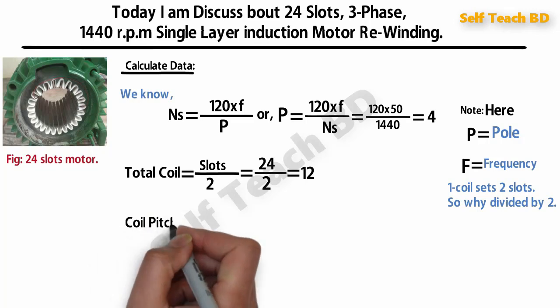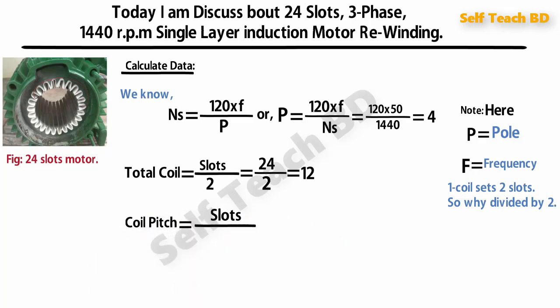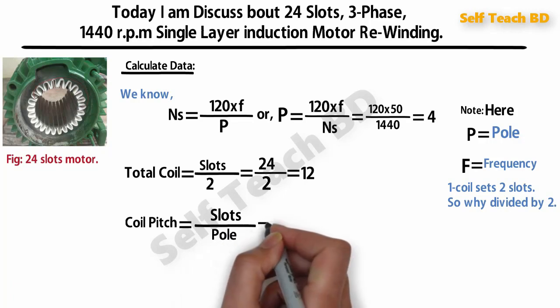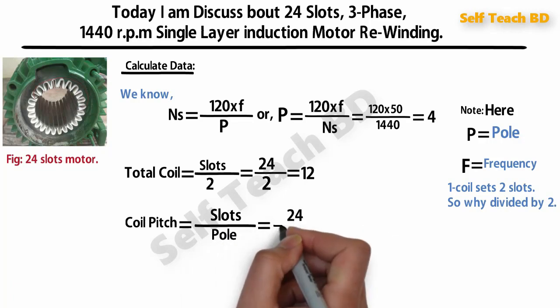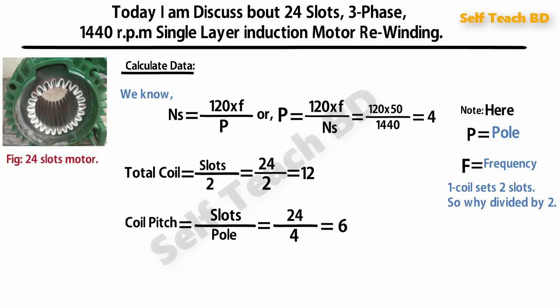Coil piece is equal to slot divided by pole. Our slot is 24 and pole we find 4. Coil piece or coil span is same, so our coil piece is 6.